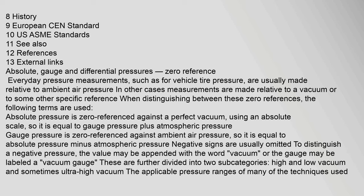Everyday pressure measurements, such as for vehicle tire pressure, are usually made relative to ambient air pressure. In other cases, measurements are made relative to a vacuum or to some other specific reference. Absolute pressure is zero-referenced against a perfect vacuum using an absolute scale, so it is equal to gauge pressure plus atmospheric pressure. Gauge pressure is zero-referenced against ambient air pressure, so it is equal to absolute pressure minus atmospheric pressure. Negative signs are usually omitted; to distinguish a negative pressure, the value may be appended with the word 'vacuum' or the gauge may be labeled a vacuum gauge.